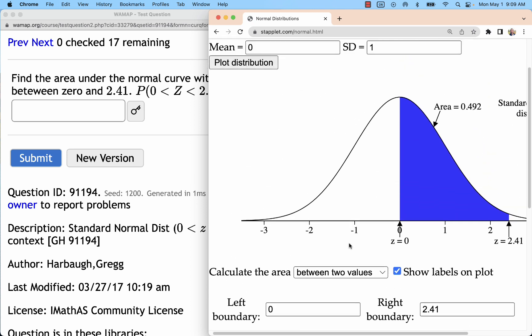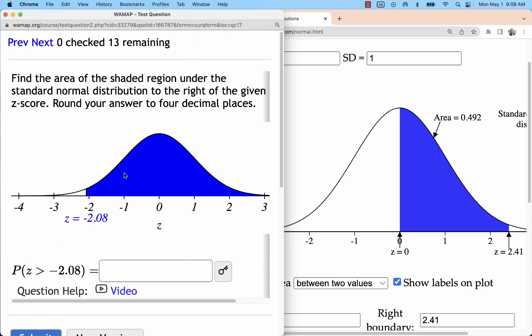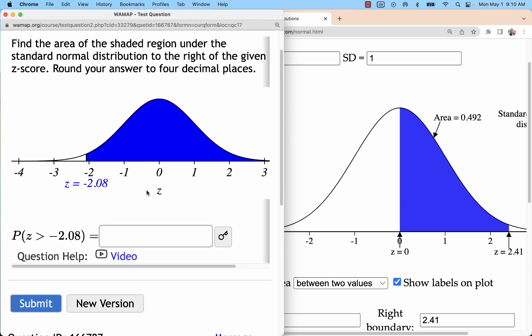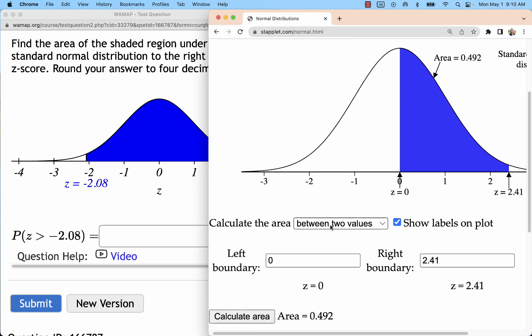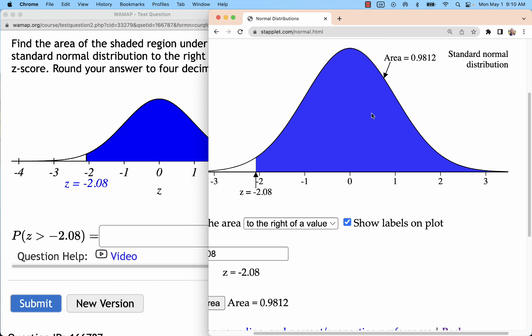Then sometimes you're looking at something where it's shading to the right. This one just happens to include an image as well. It's always nice to see the image because then we can sort of check our answer, see if it looks right. Here I'm shading more than half. In fact, I'm shading 98 percent.